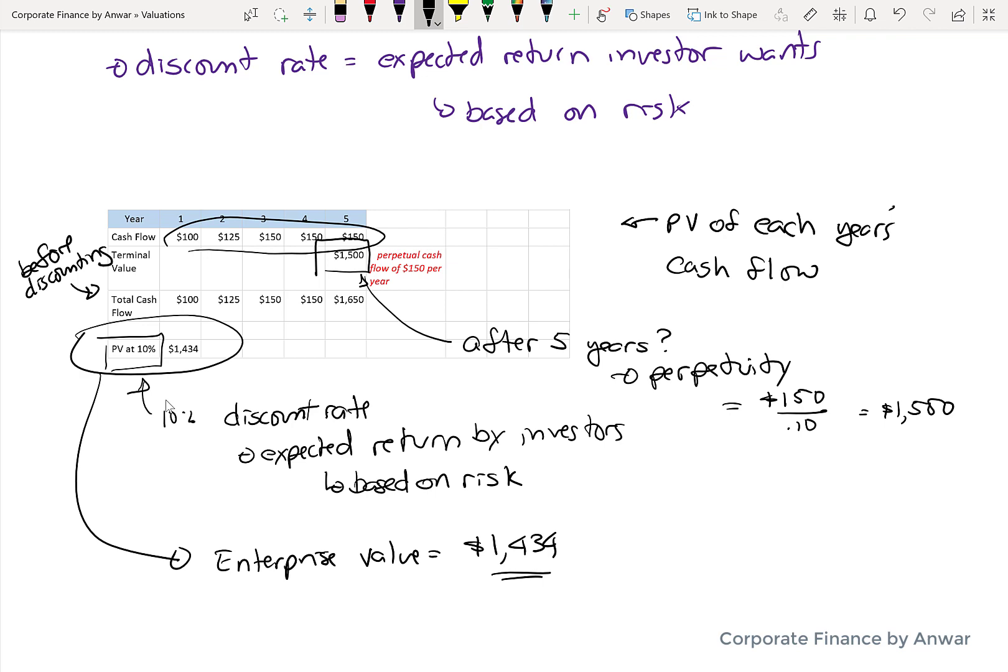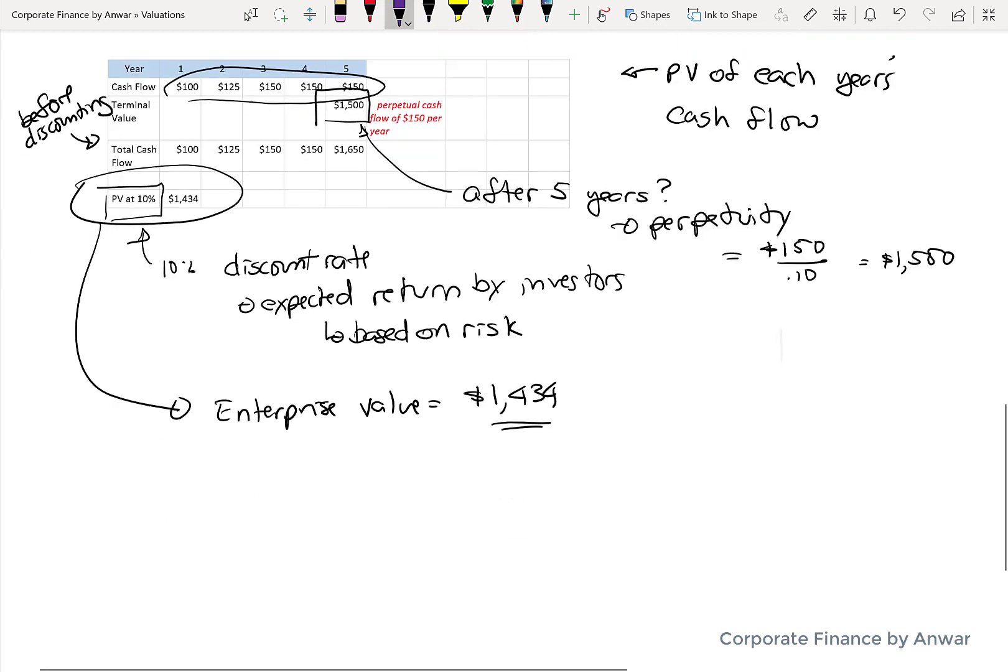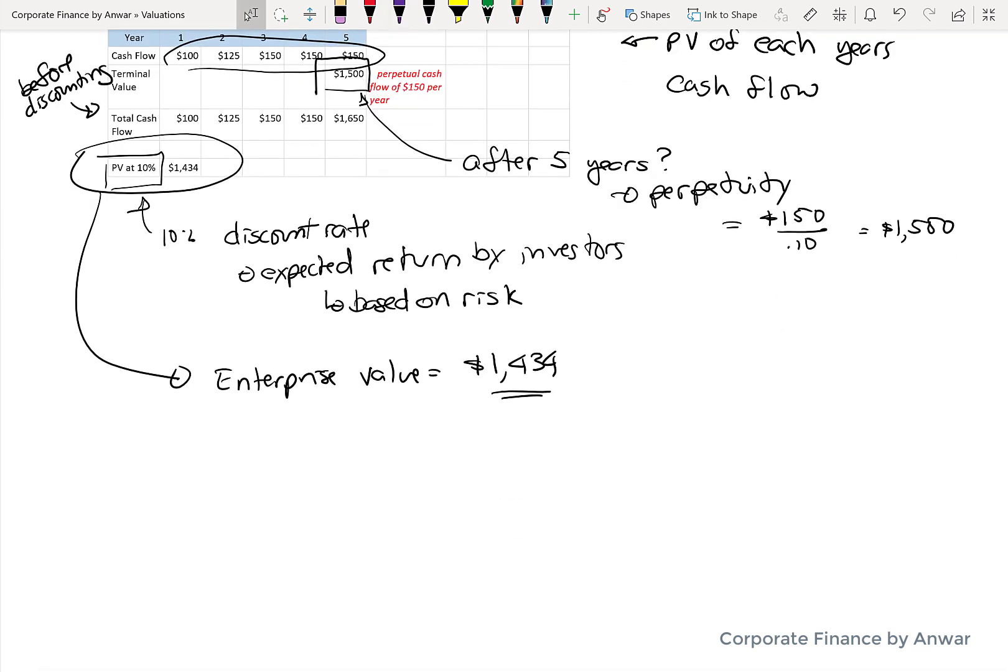And if there was debt in the company, then remember, you have to adjust for the debt component by taking it off that value to get the equity value. Because enterprise value is equal to debt plus equity.